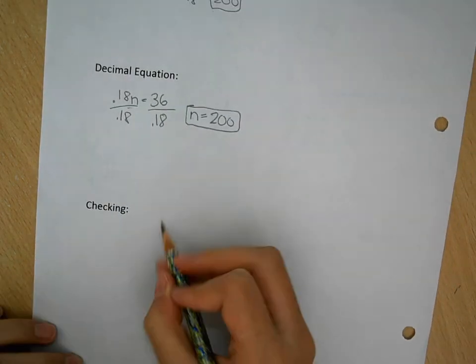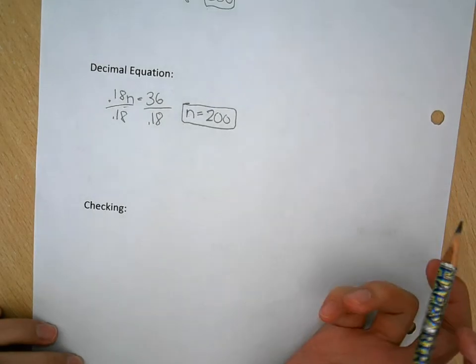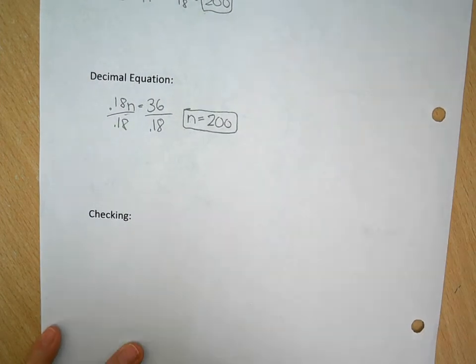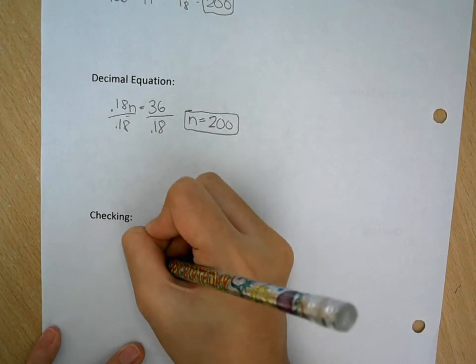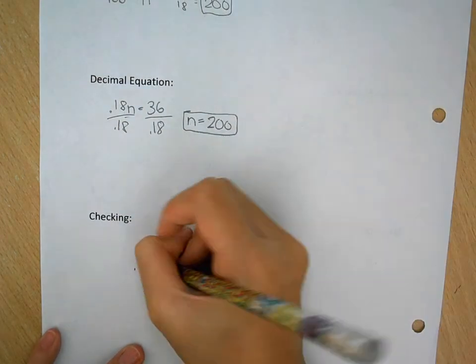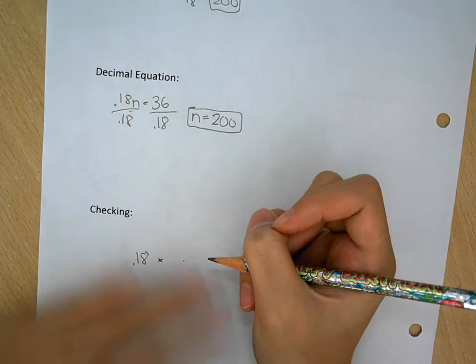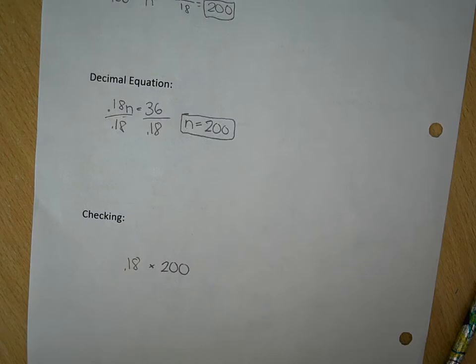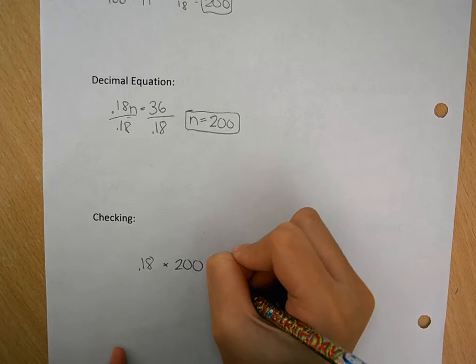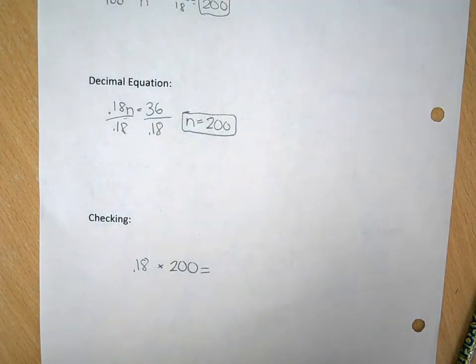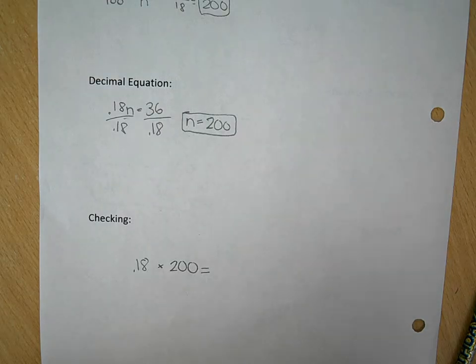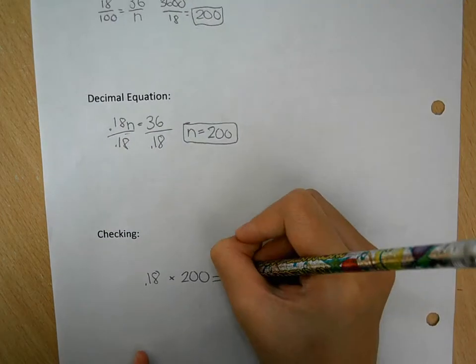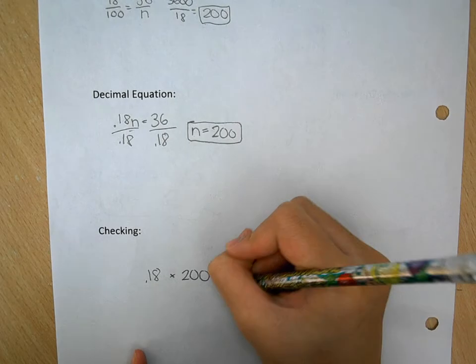To check, I'm going to use this kind of like a decimal equation. So 0.18 times 200 equals, yeah I'm using calculator, which is 36. So I am perfect.